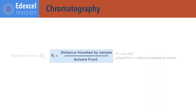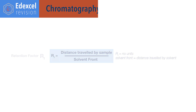For chromatography. Rf equals distance travelled by sample divided by solvent front, where the solvent front is the distance travelled by the solvent. Rf, or retention factor values, have no units.